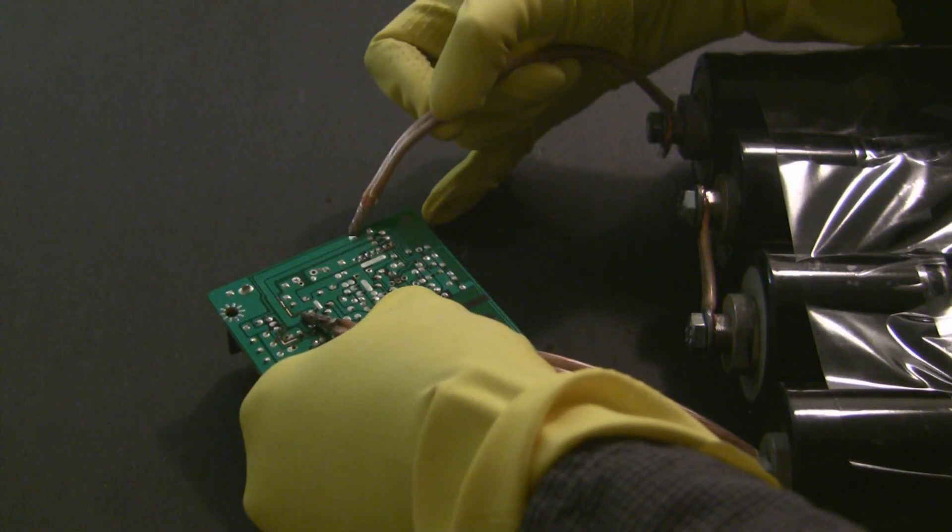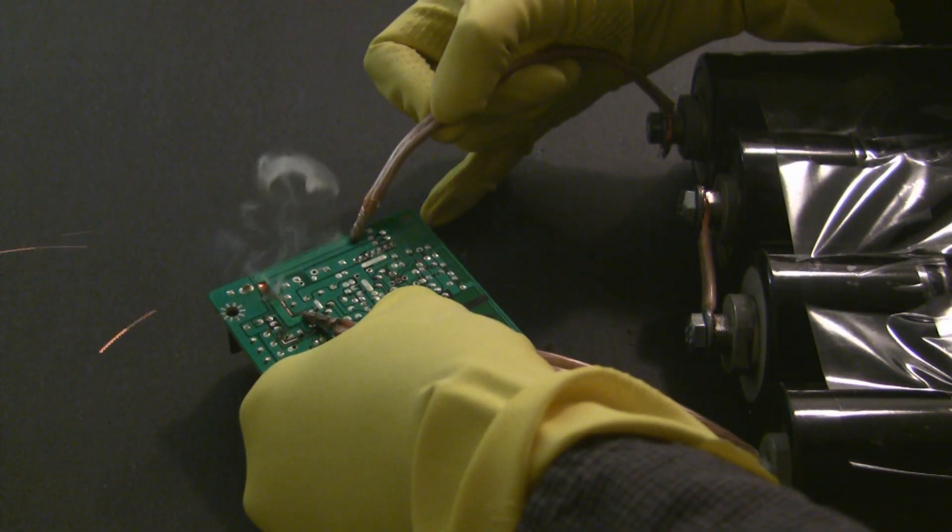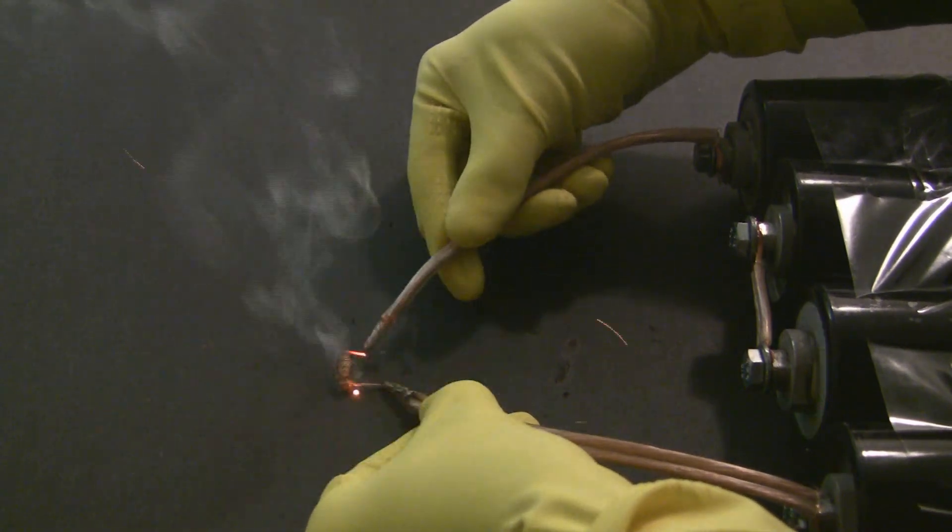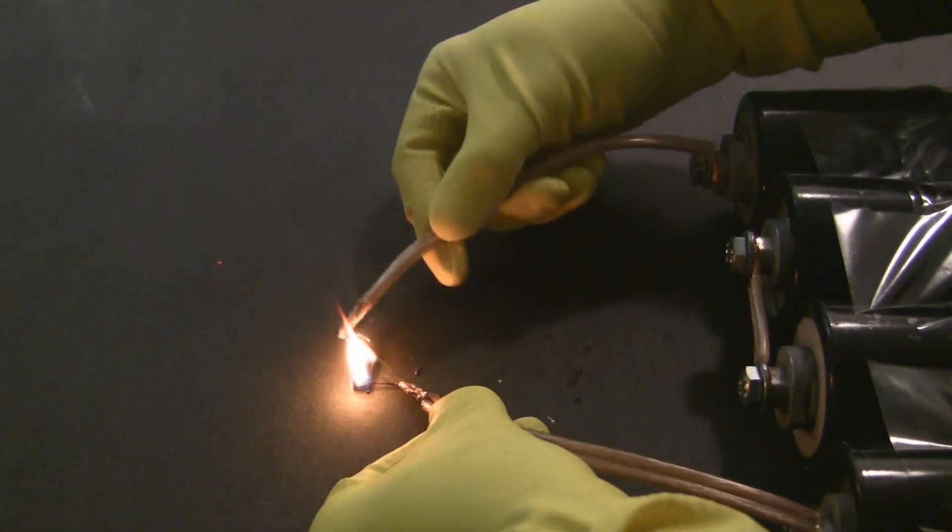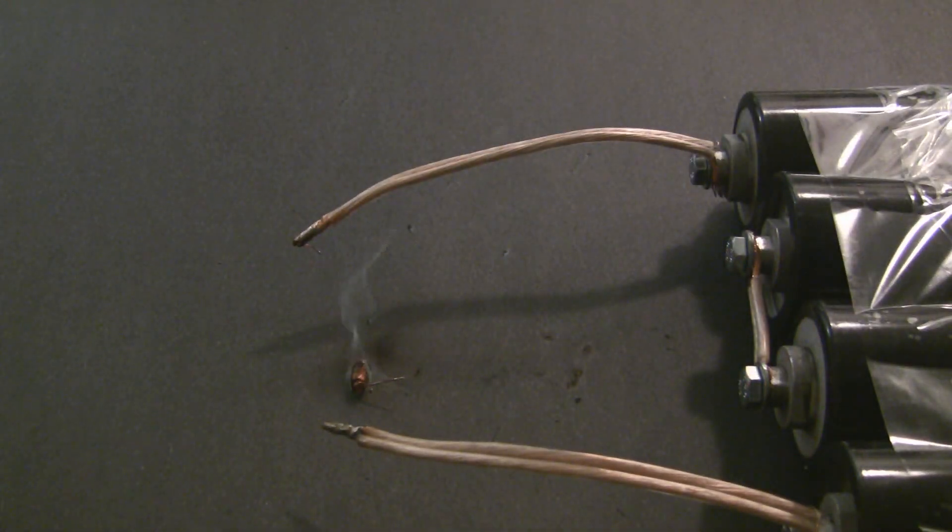Well, the PCB traces aren't melting anymore, now they just vaporize. And it turns out that the insulation on magnet wire is flammable. I didn't know that.